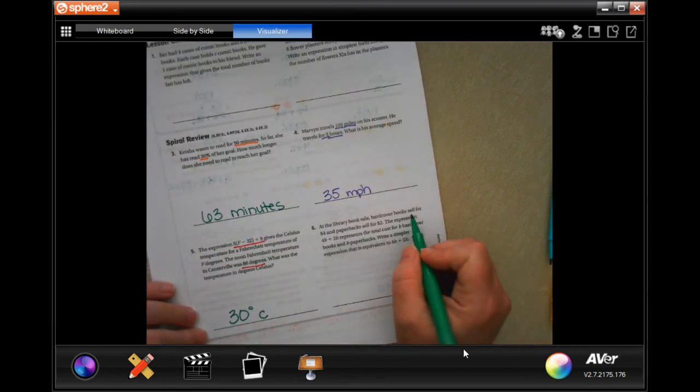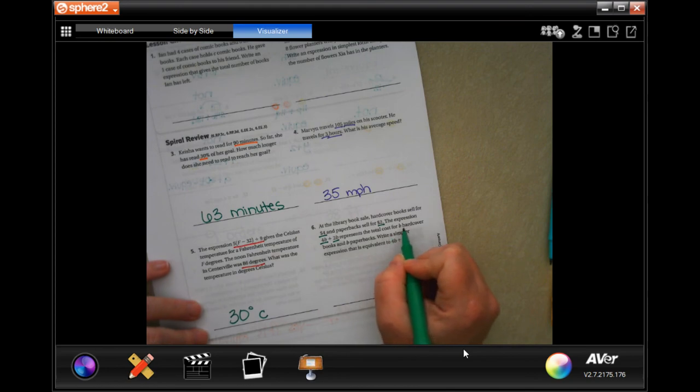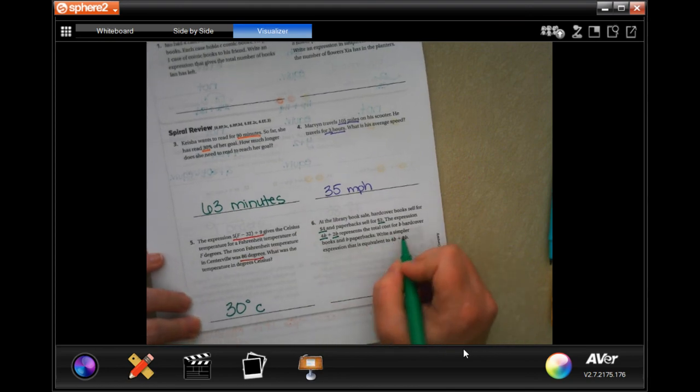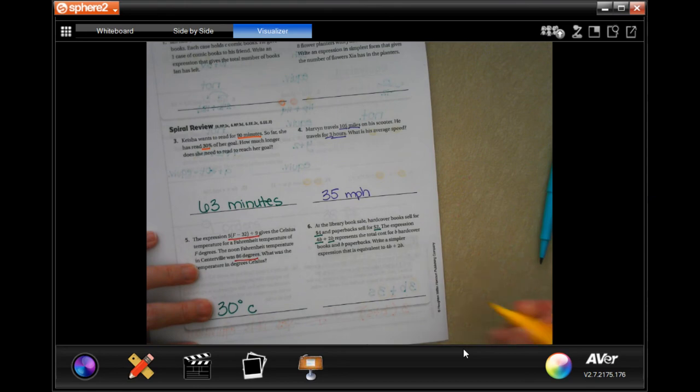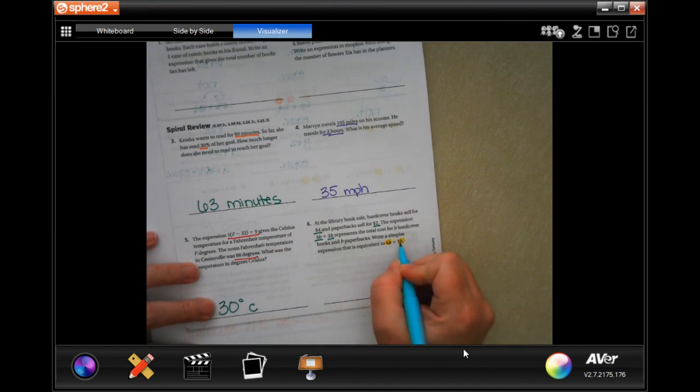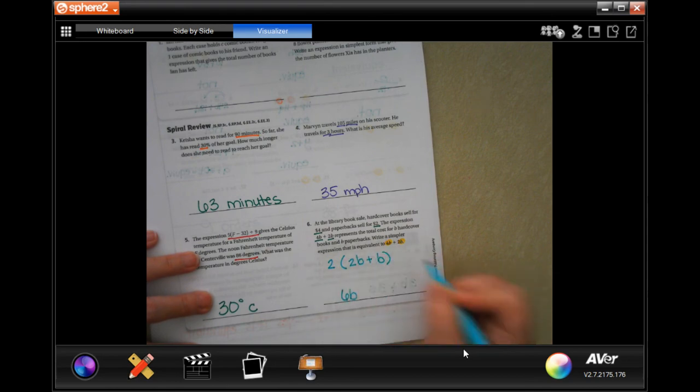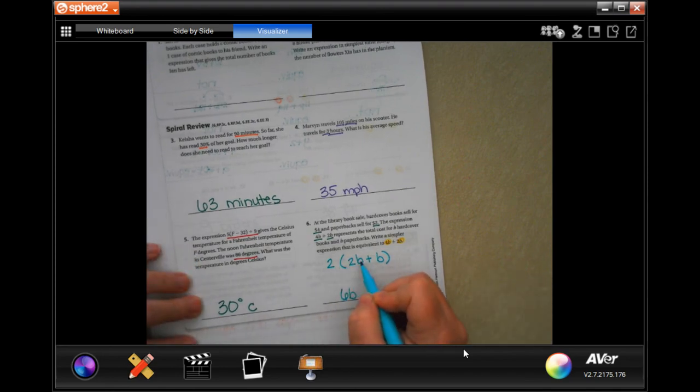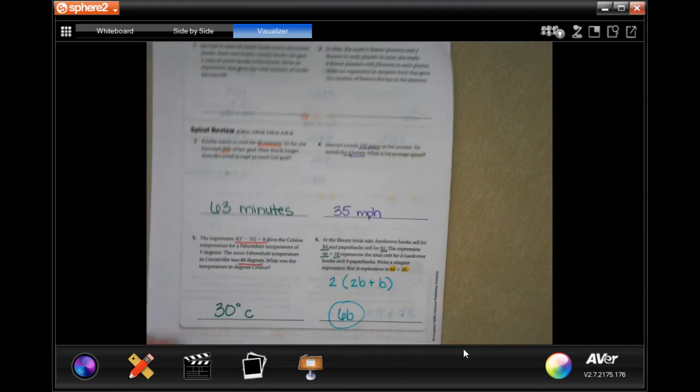At the library book sale, hardcover books sell for $4 and paperbacks sell for $2. The expression 4B and 2B represents the total cost for B hardcover books and B paperbacks. Write a simpler expression that is equivalent to 4B plus 2B. So we could, because they're both B's, we can just combine them. 2 plus 4 is 6, keep the B. Again, if you want to get fancy, take out 2, make it onto 2B plus B. Because 2 times 2 is 4, keep the B, 2 times B is 2B. This is perfectly acceptable though, 6B.